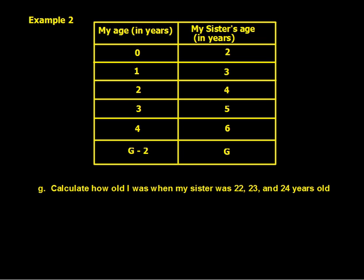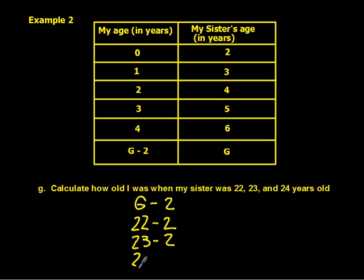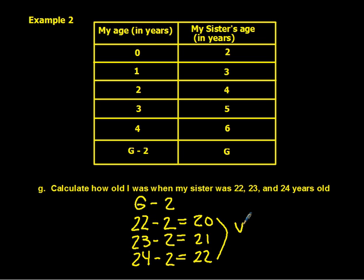Letter G. Calculate how old I was when my sister was 22, 23, and 24 years old. Using the formula G minus two: 22 minus two, 23 minus two, and 24 minus two — so I was 20, 21, and 22 years old.